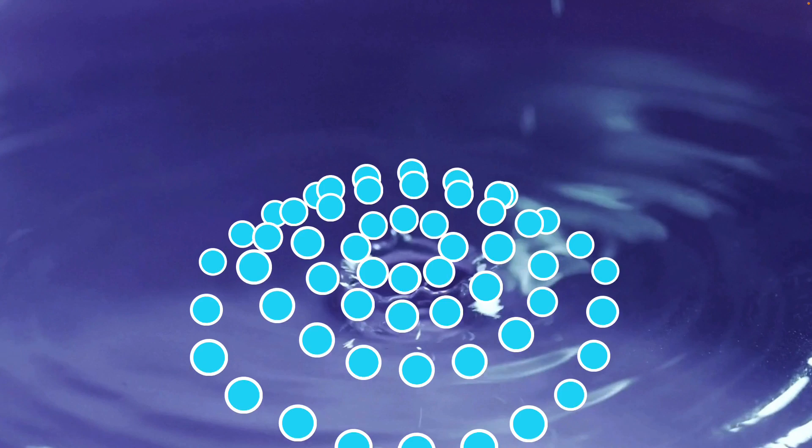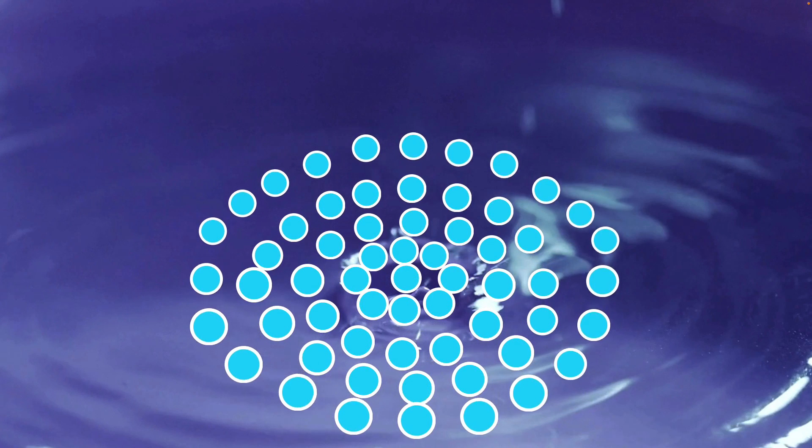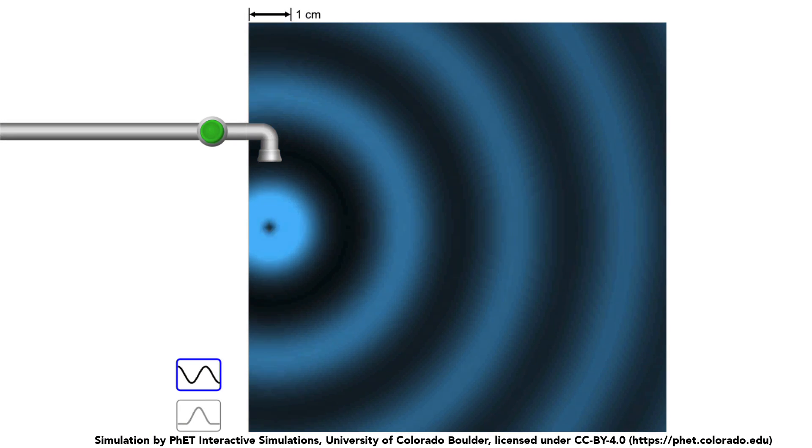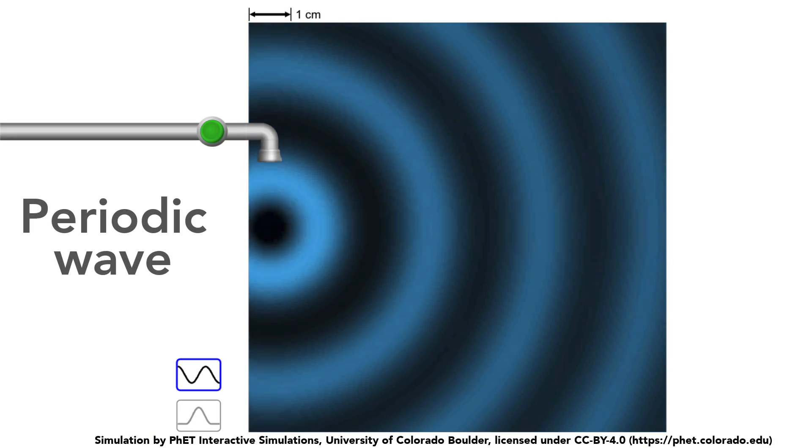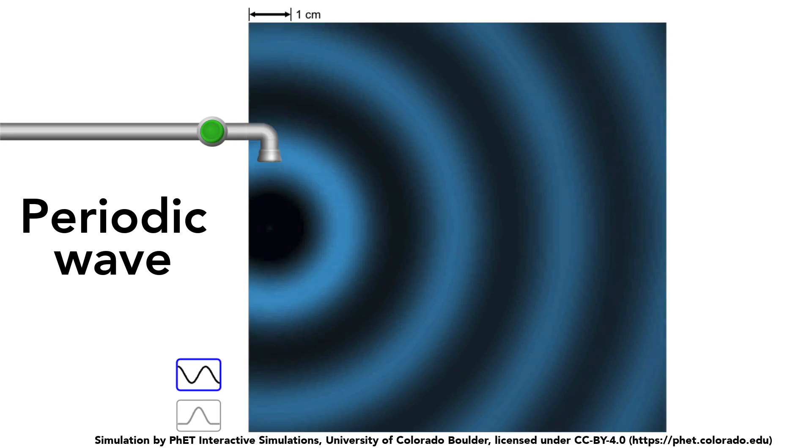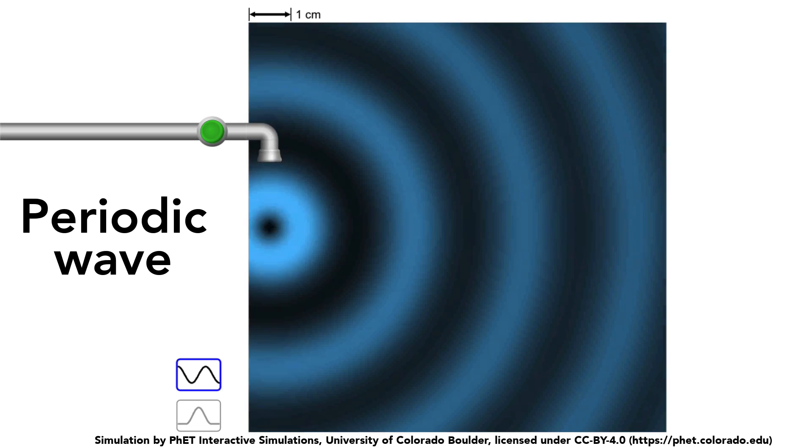Light can be described using a wave model. When you disturb water at a particular point, it makes those molecules vibrate, which in turn makes the molecules surrounding it vibrate, and so on. That's how the disturbance propagates outward as a ripple. And if you have a continuous disturbance, like water dripping from a tap, then you have a continuous wave or a periodic wave.